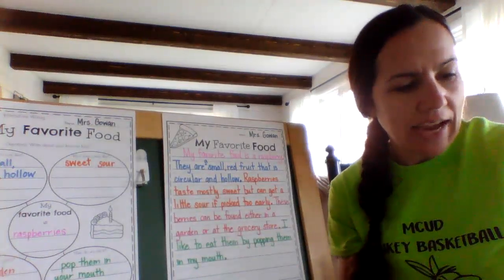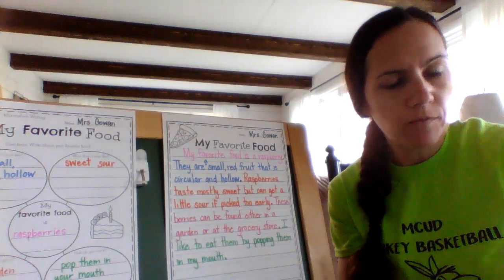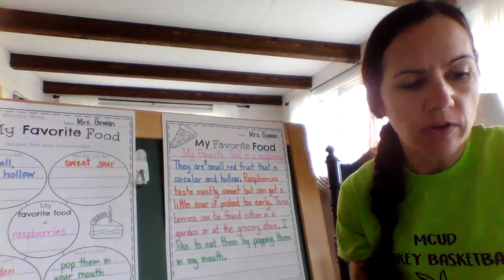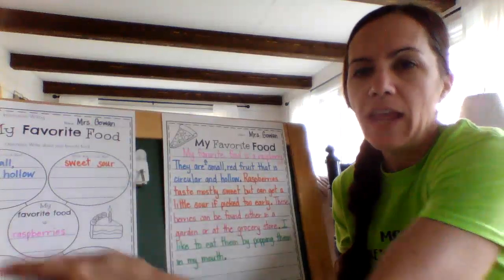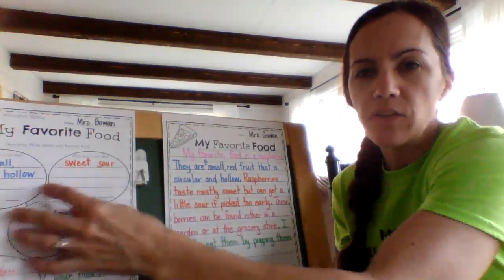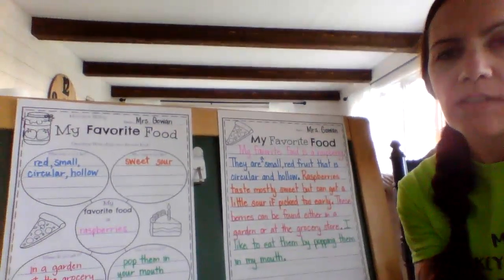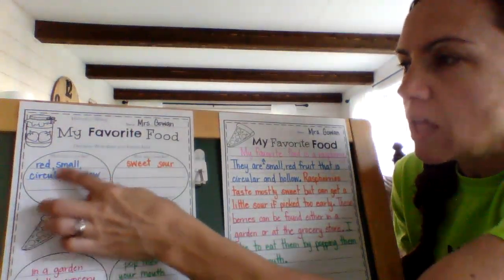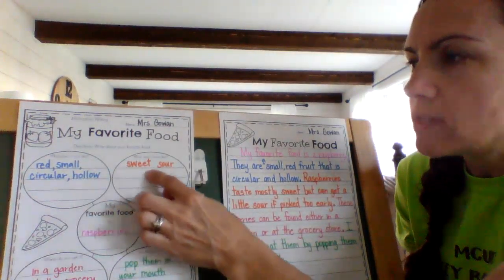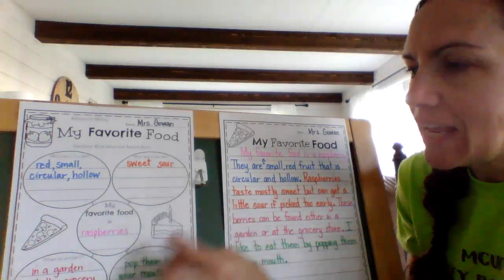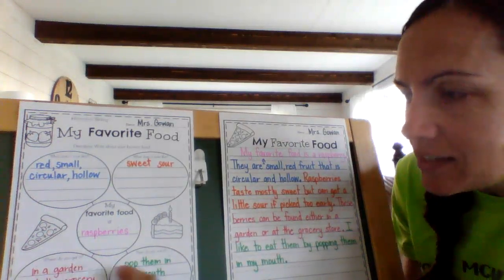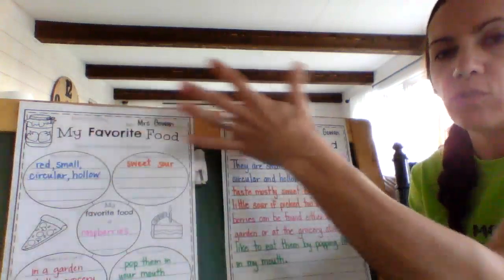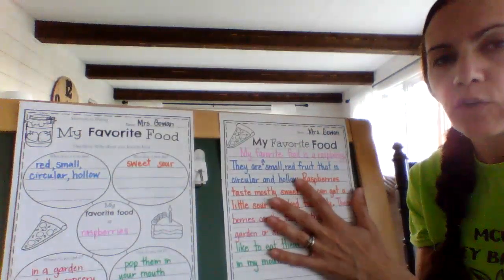Today's lesson is Task 4 for ELA, which is kind of like the second part of Task 3. It's about your favorite food, and you guys already did your organizer which tells me about your favorite food — what does it look like, what does it smell or taste like, where do you get it, and how do you eat it. Those are the different things we're going to transfer over here to our final draft.